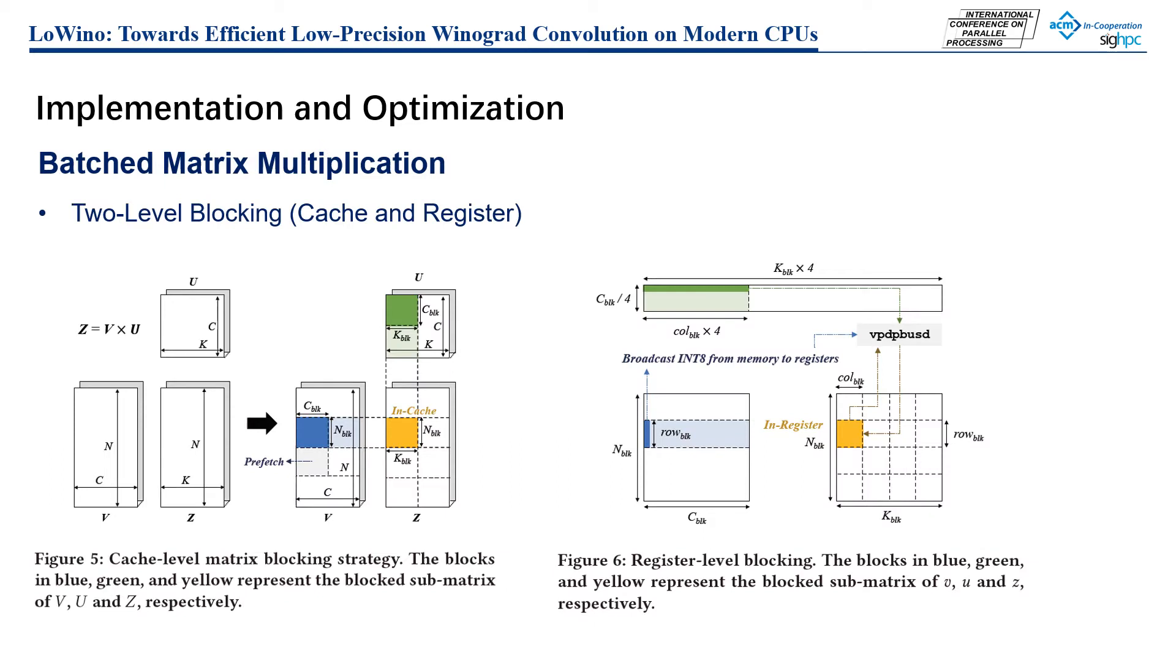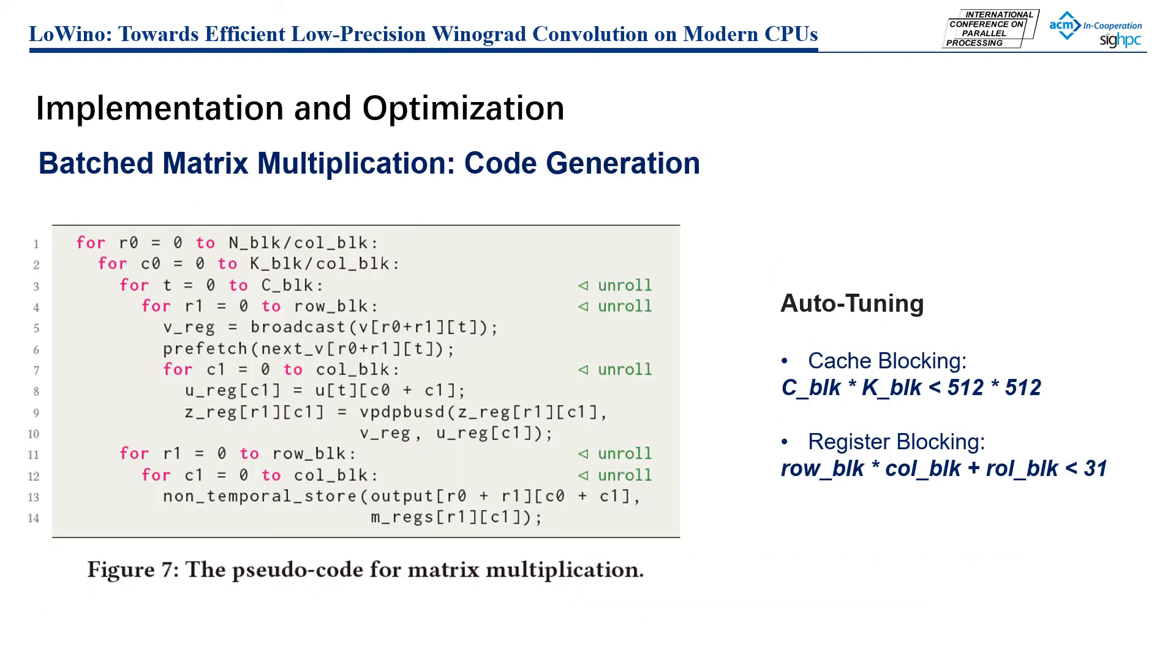For the matrix multiplication step, we implement our own matrix multiplication kernels. We perform a two-level blocking strategy to enhance data reuse for both cache memory and registers.